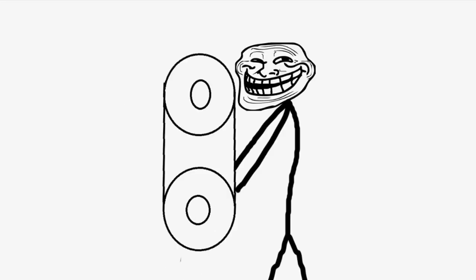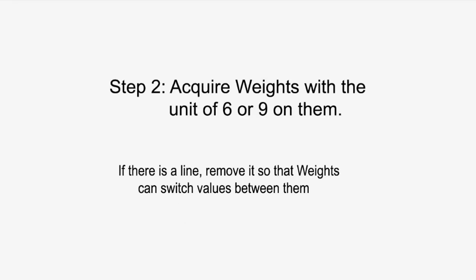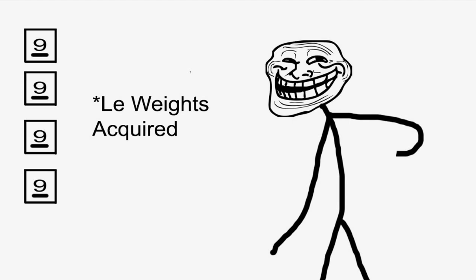Step 1: Acquire a drive belt. Step 2: Acquire weights with the unit of 6 or 9 on them. If there is a line, remove it, so that the weights can switch values between them. The weights acquired.